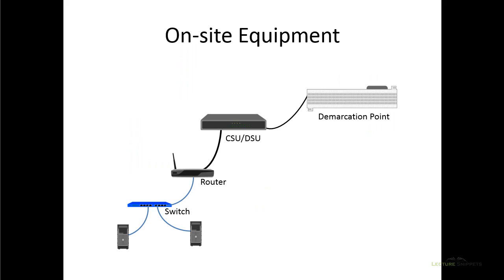Let's look at some of the equipment we may find within our company. In the LANs, we talked about having the switch, with different computers plugged into it. The switch is plugged into a router, and the router allows different networks to communicate with each other. The router will typically plug into a device — either a modem or a CSU/DSU — which is a typical device for our WAN connections. This device allows us to take the technology from our third party company and send data over it.